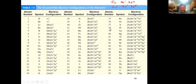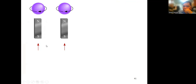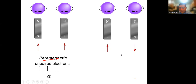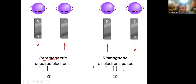The presence of unpaired electrons makes an atom paramagnetic; paired electrons make it diamagnetic. You can be asked which of the following is paramagnetic or diamagnetic — all you need to do is look for unpaired electrons. If there's an unpaired electron, it's paramagnetic; if all are paired, it's diamagnetic.